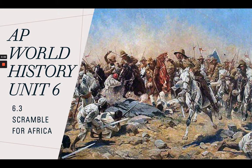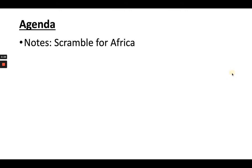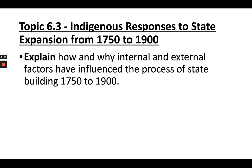Hey folks, it's Ms. Sinclair for AP World History Modern. Today we are going to be continuing our Unit 6 lectures. Unit 6 looks at the consequences of industrialization, and we are going to be looking at the Scramble for Africa. Our topic is Indigenous Responses to State Expansion, and our objective is: you will be able to explain how and why internal and external factors have influenced the process of state building from 1750 to 1900.